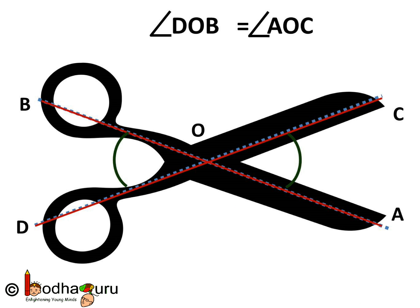It is a simple design. You already know if two lines intersect each other, then the vertically opposite angles are equal.